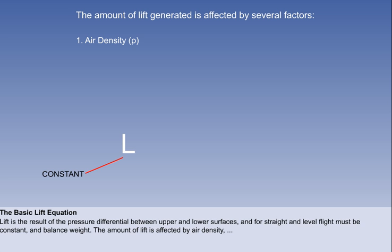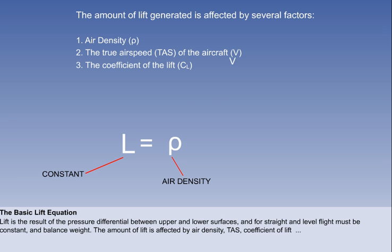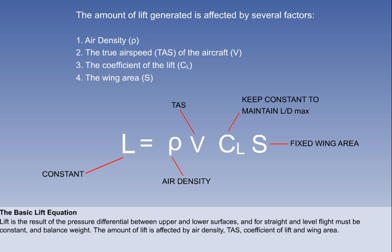First, air density denoted by the symbol rho. Next, the aircraft's true airspeed or TAS enters the equation as V. The next factor is the coefficient of lift. The final factor is the wing area.